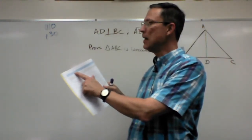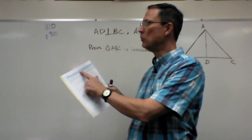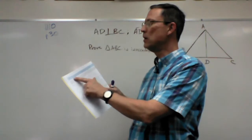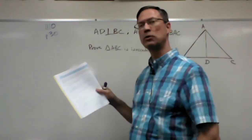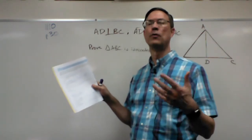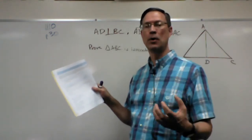If a leg and an acute angle of one right triangle are congruent to a leg and an acute angle of another right triangle, then the two triangles are congruent. So again, we have to prove that we are dealing with right triangles. That's important.